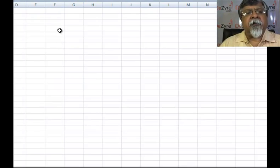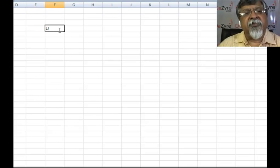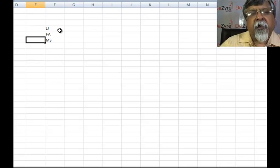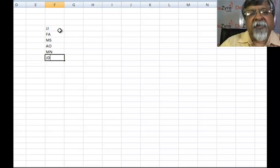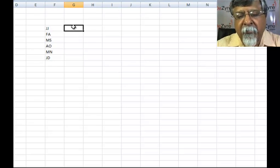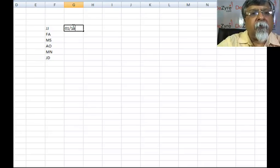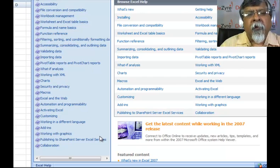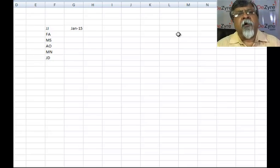How do we make out the coupon dates from a code sheet? JJ stands for January and July, FA for February and August, MS for March and September, AO for April and October, MN for May and November, JD for June and December. And within each, it could be an O1 or a 15.